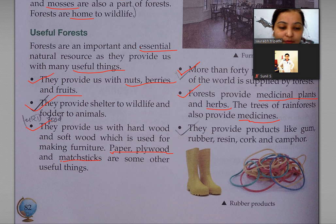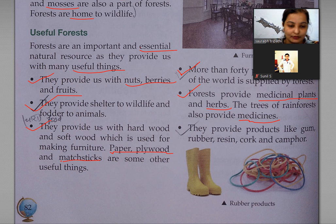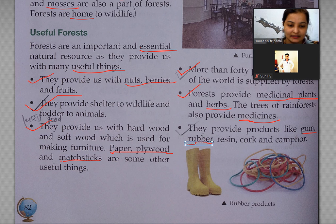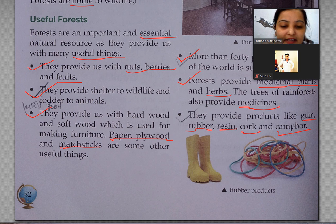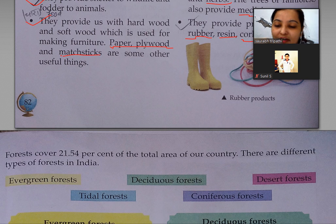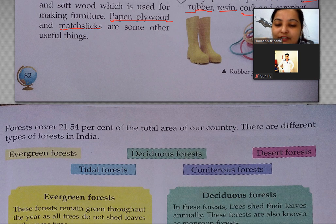They provide products like gum, rubber, resin, cork and camphor. Resin means tar, cork means sindur, and camphor means kapoor. Ye saari cheezein forest hamare liye provide karta hai.